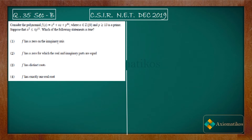The options are saying: f has a zero on the imaginary axis; f has a zero for which certain conditions hold. So what is happening is you have to find the zeros of this polynomial. We have f(z) = z² + az + p¹¹, where p is a prime number greater than 13 and a is a non-zero integer.